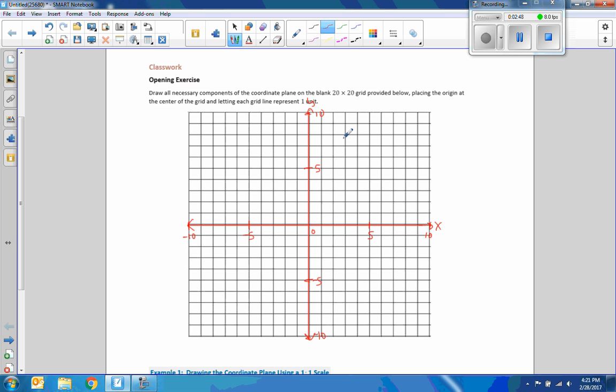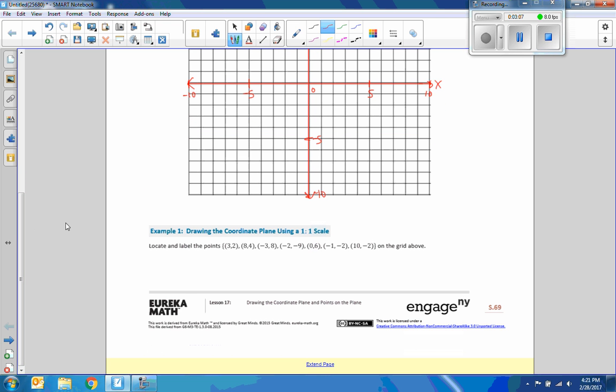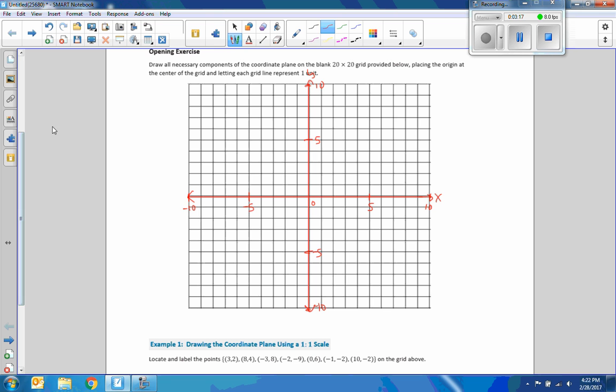So there is a grid all set up. Y-axis is labeled. X-axis is labeled. Origin is labeled 0. And every fifth unit, all directions. So that is how we would label a coordinate plane on a piece of graph paper. So now example 1 says locate and label the points 3, 2, and so on on the grid above. So I'll put that like that so I can see them. I'm going to color code all of these.